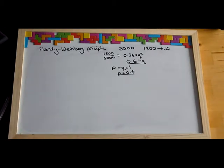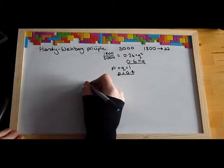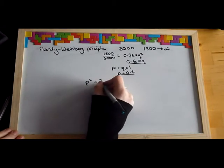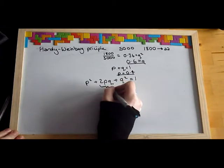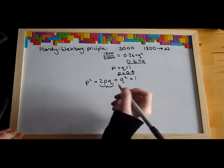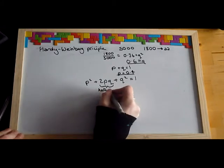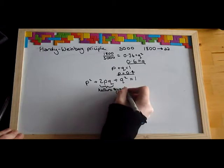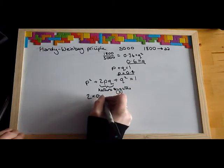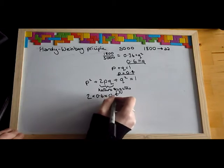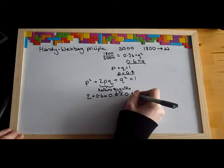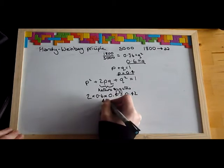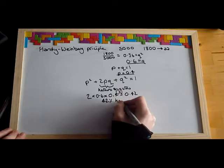The next part of the question could be to calculate the percentage of heterozygotes. From the equation, heterozygotes are represented by 2PQ. So do 2 times 0.6 times 0.4, which equals 0.48. So 48% of the population are heterozygotes.